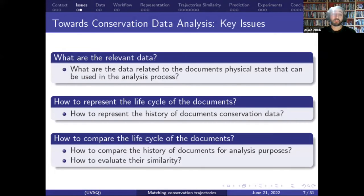My work addresses three key issues. The first is the identification of the relevant data at the BNF — what data is related to the document's physical state and can be used by the system. The second is how to represent the relevant data describing the documents and their conservation history or life cycle. The third is how to compare document life cycles and evaluate their similarity.